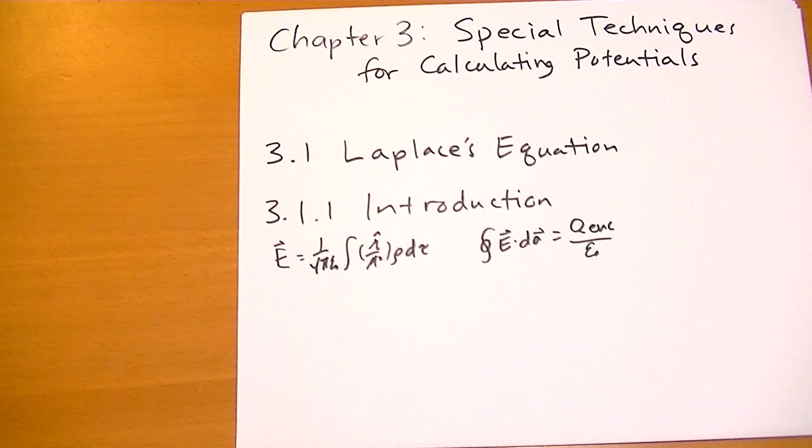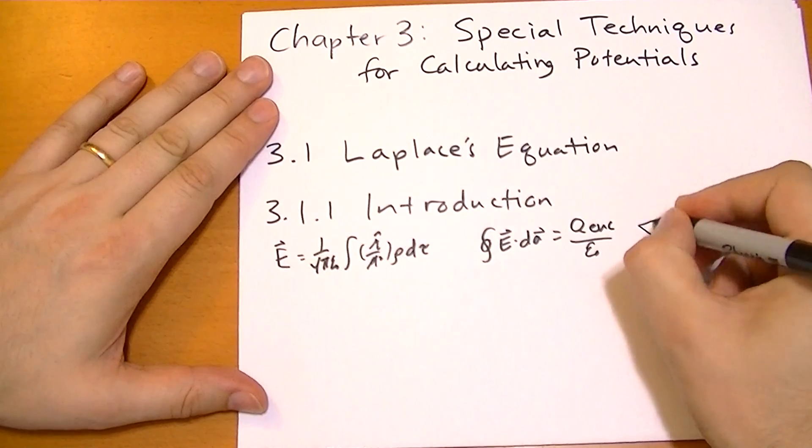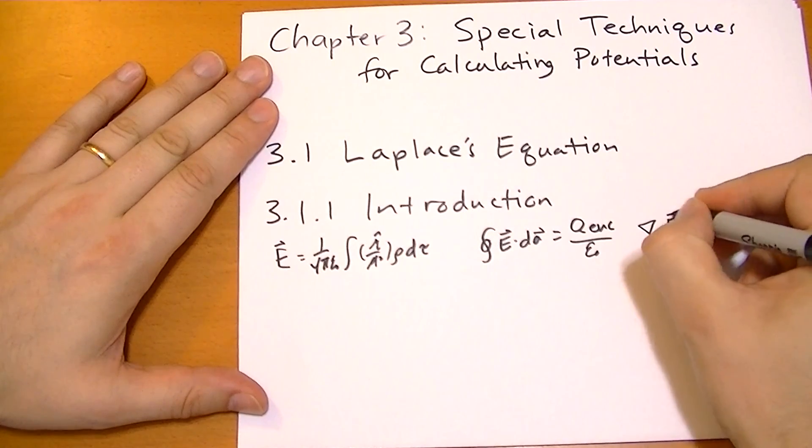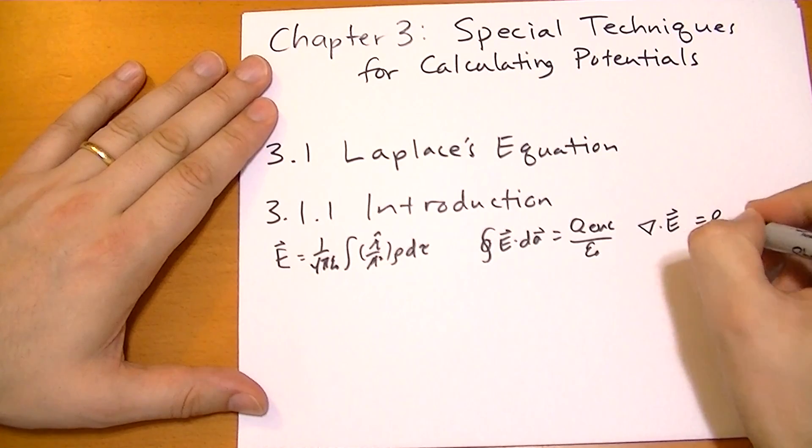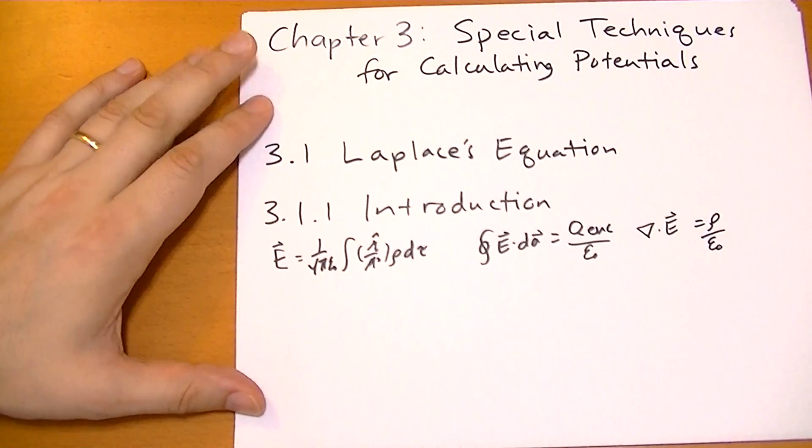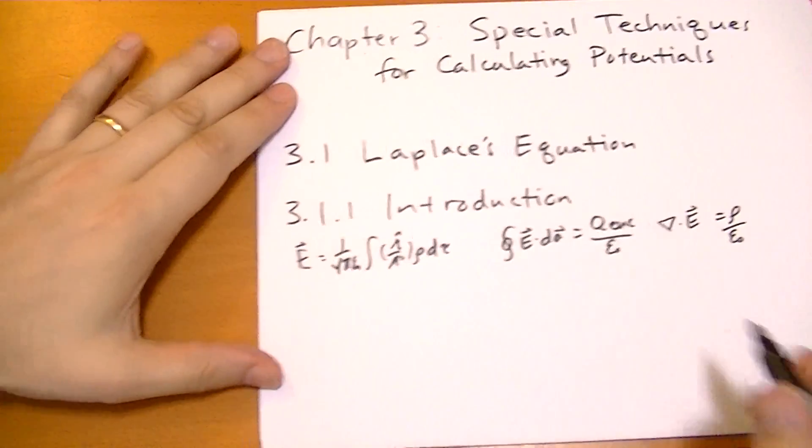Then we talked about using a differential form of Gauss's Law. The divergence of the E vector is equal to the charge over epsilon naught. Then we introduced the concept of the potential.